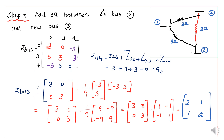How to find the new Z-bus 2x2 matrix? Write the 2x2 matrix: 3, 0; 0, 3. Multiply minus 1 divided by Z(4,4) = 9. Take the column elements: minus 3 and 3. Write the row elements: minus 3 and 3. Multiply: 9, minus 9; minus 9, 9. Multiplied by 1/9: 1, minus 1; minus 1, 1. Subtracting: 3 minus 1 = 2; 0 minus minus 1 = 1; 0 minus minus 1 = 1; 3 minus 1 = 2. So this is the final Z-bus matrix.